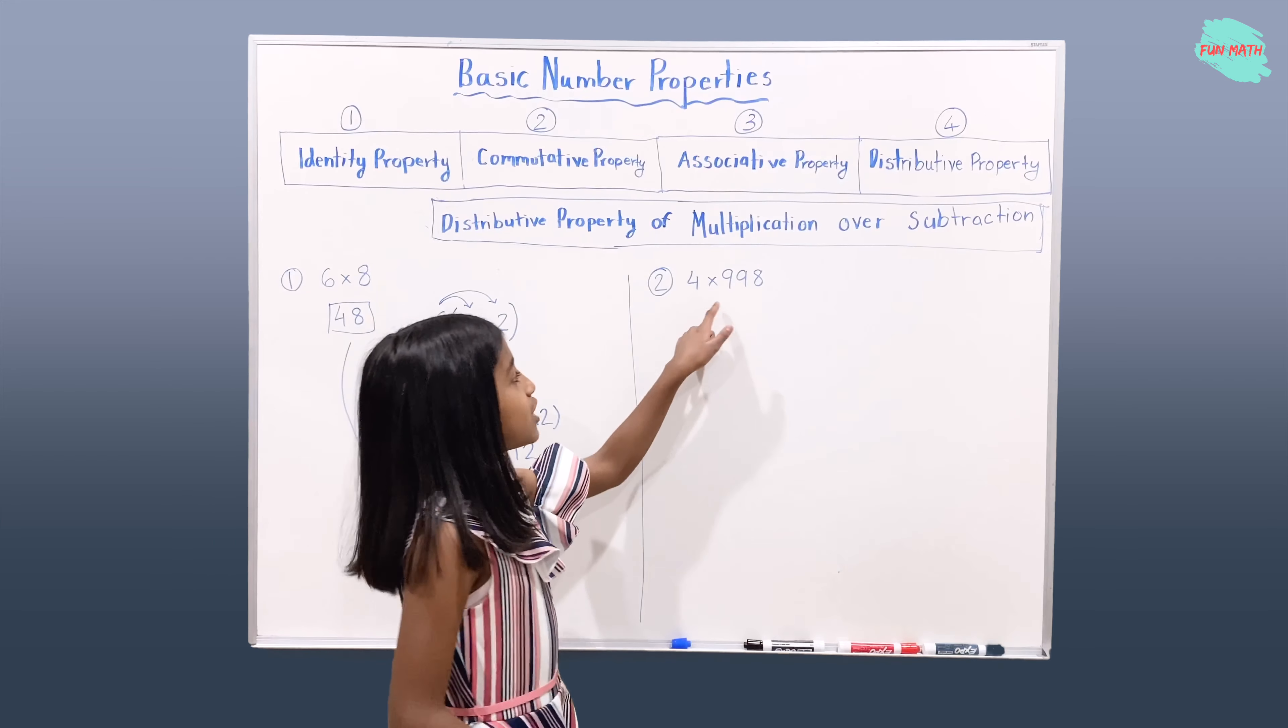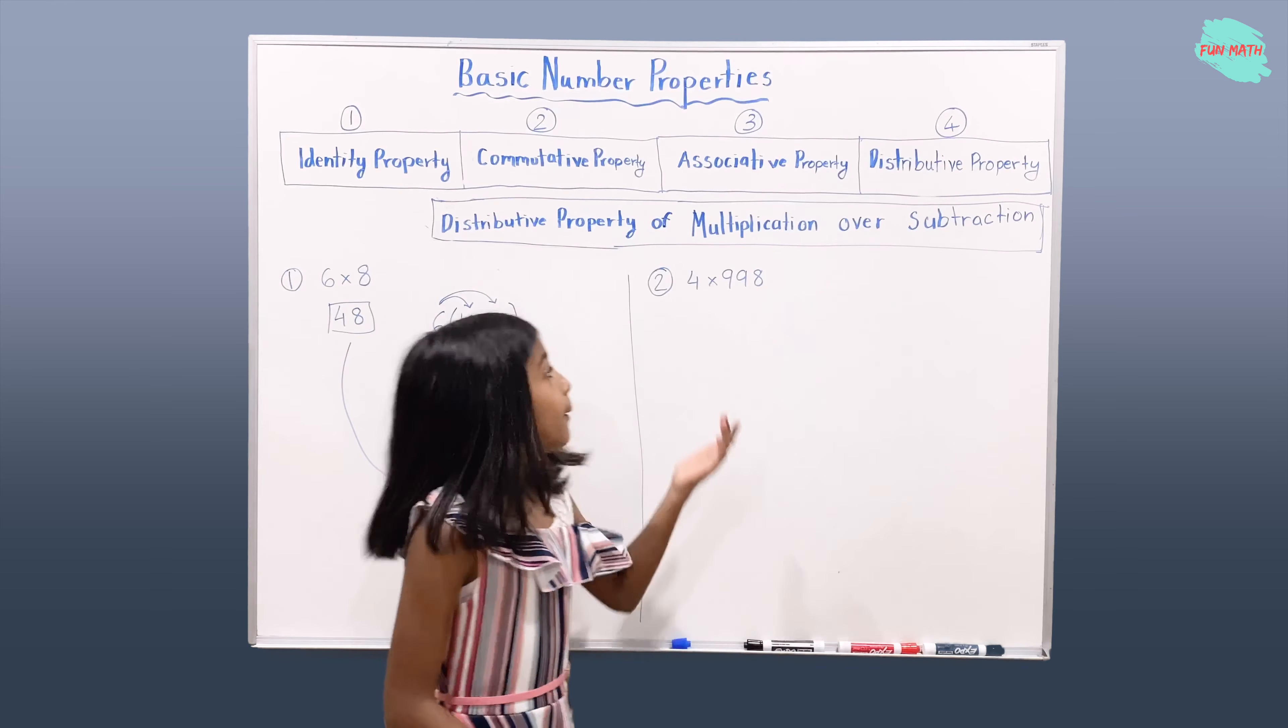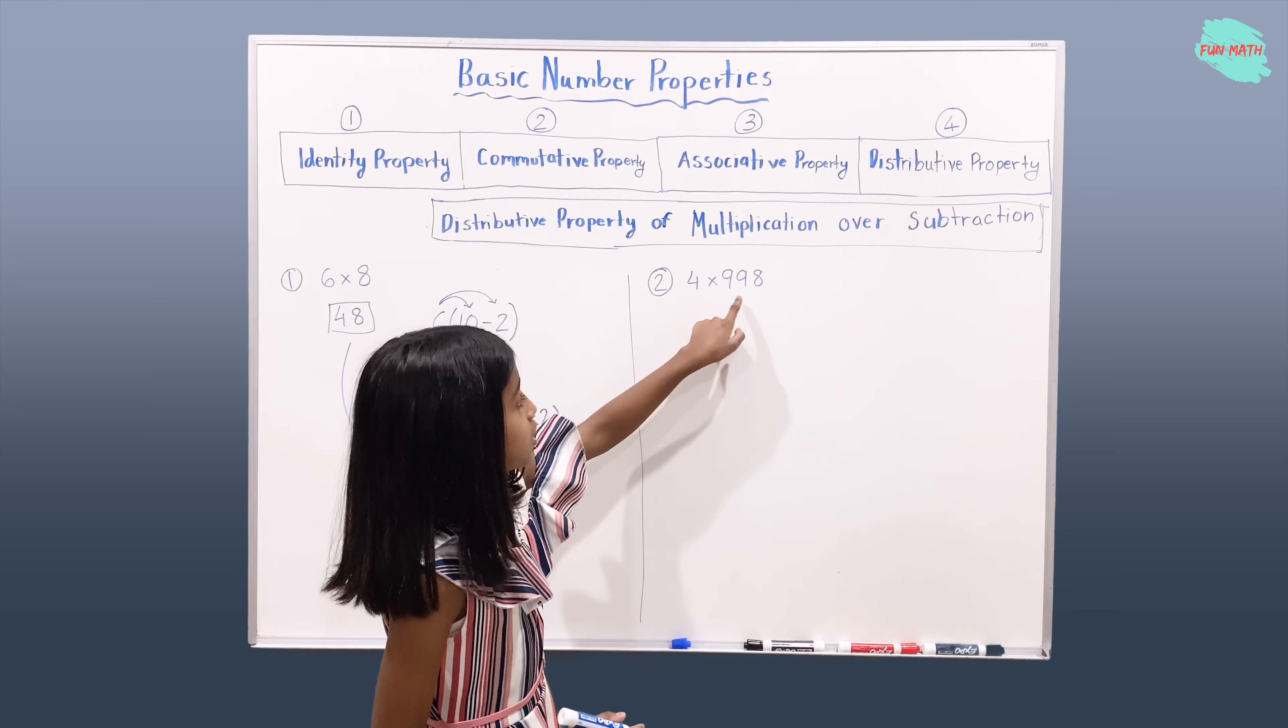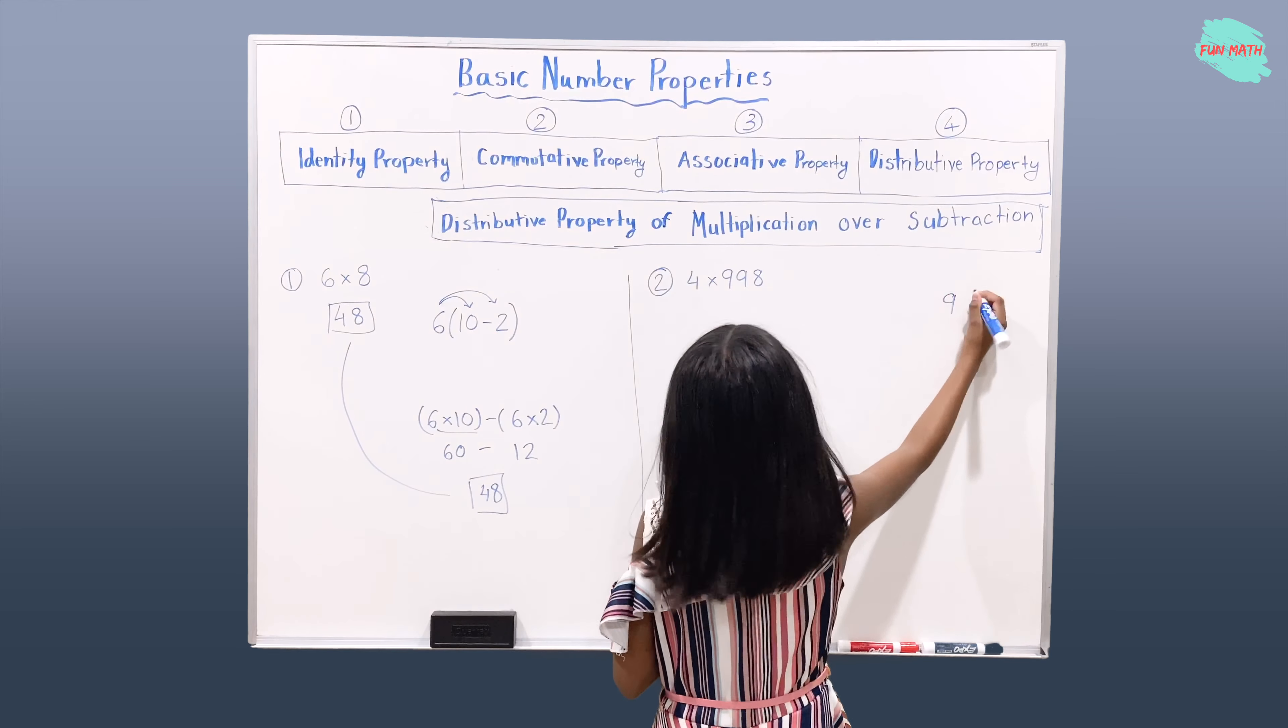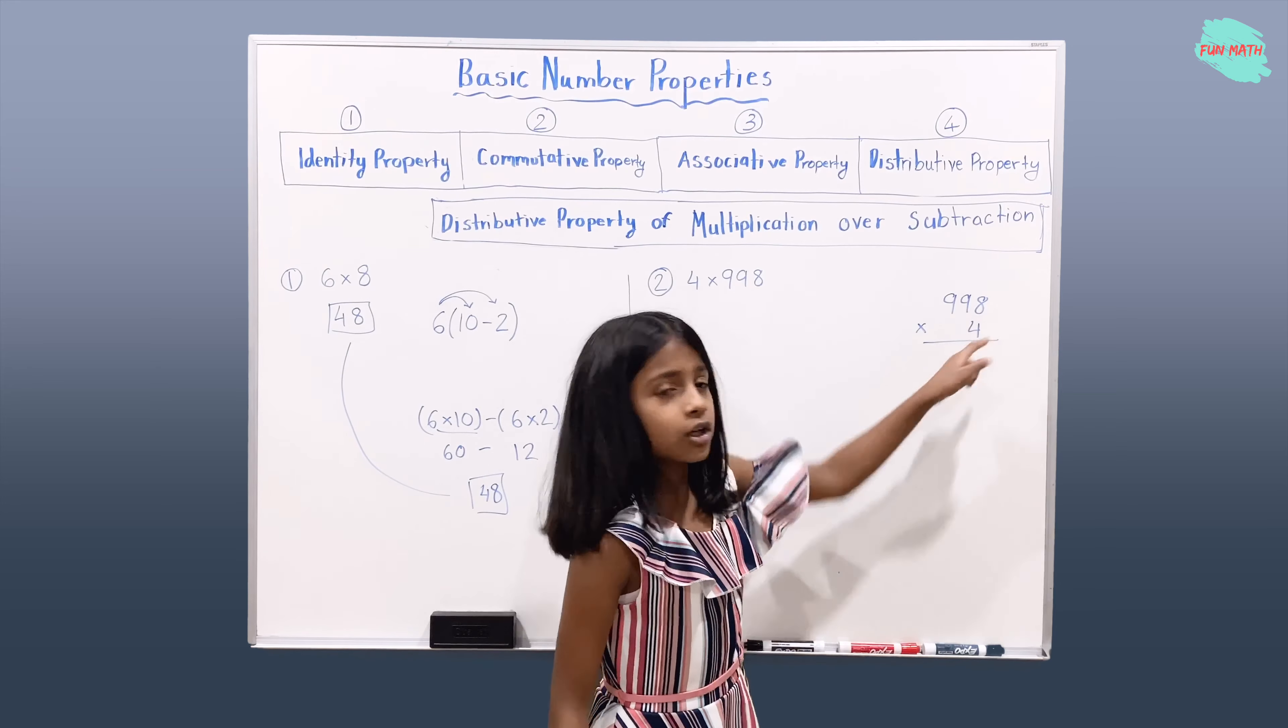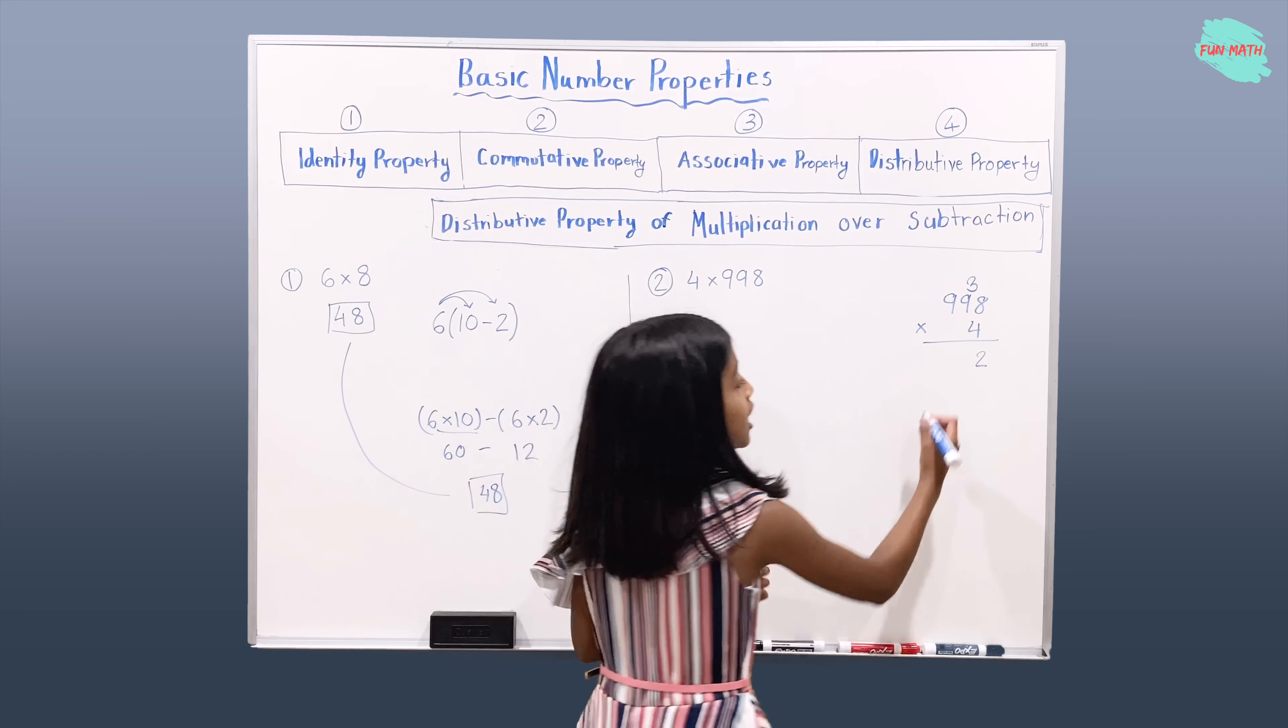The second example is 4 times 998. So let's multiply this because I don't remember the multiplication table of 998. So let's do that. 998 times 4. If you multiply 8 by 4, you get 32. If you multiply 9 by 4, you get 36. 36 plus 3 is 39.